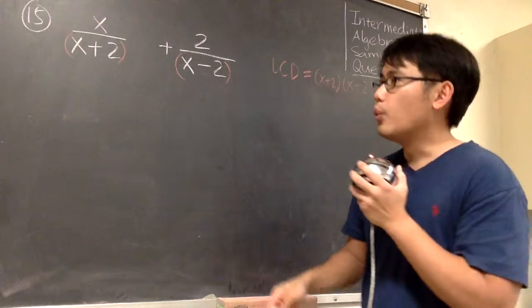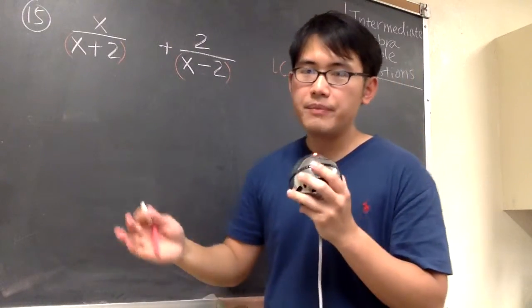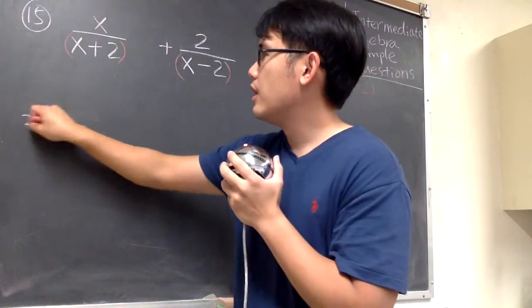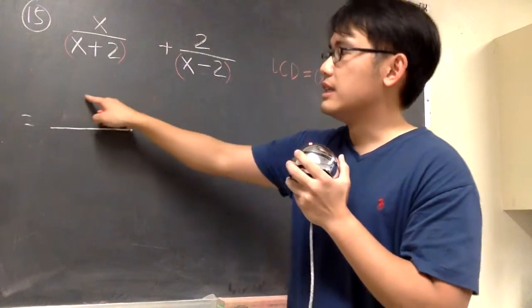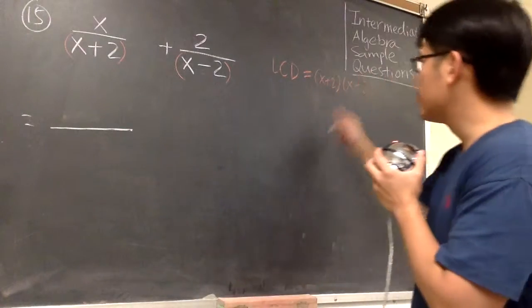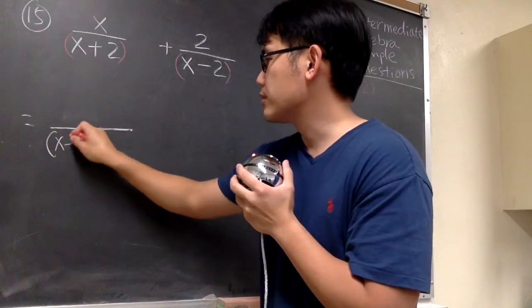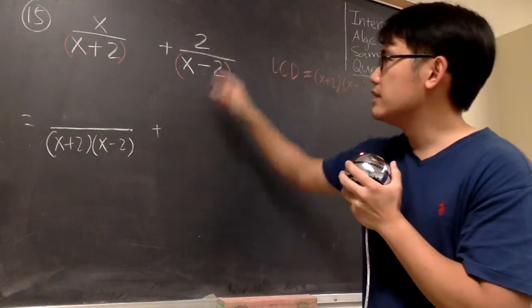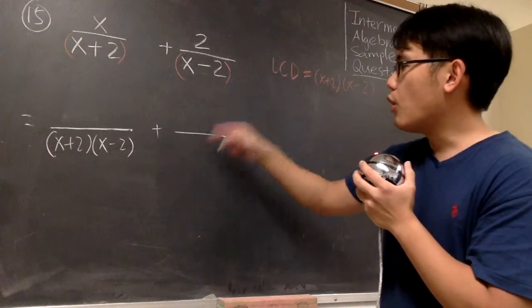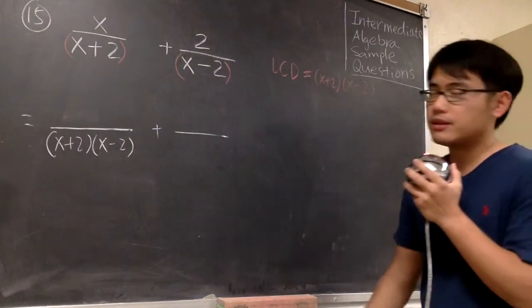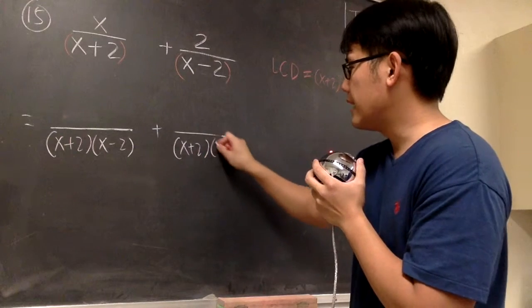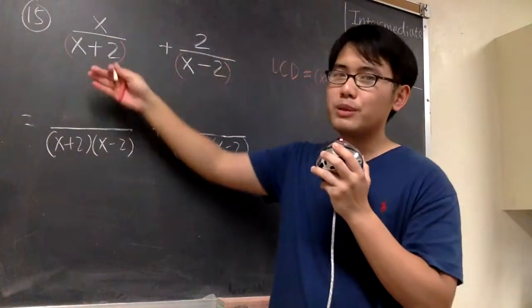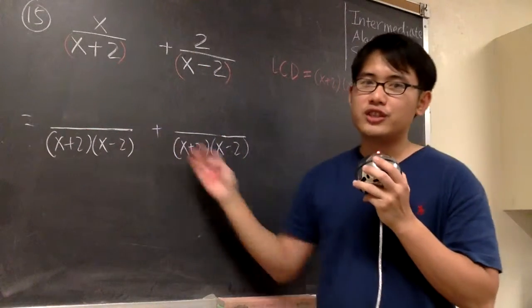And the idea is, we want to look at both fractions and change them so that they all have the lowest common denominator. And let me write this down. For the first one, I want to write it down as something on the top over that for the denominator, x plus 2 times x minus 2. And then we add it with x plus 2 times x minus 2. And we just have to figure out what do we need to multiply for the first fraction and also the second fraction to achieve this.